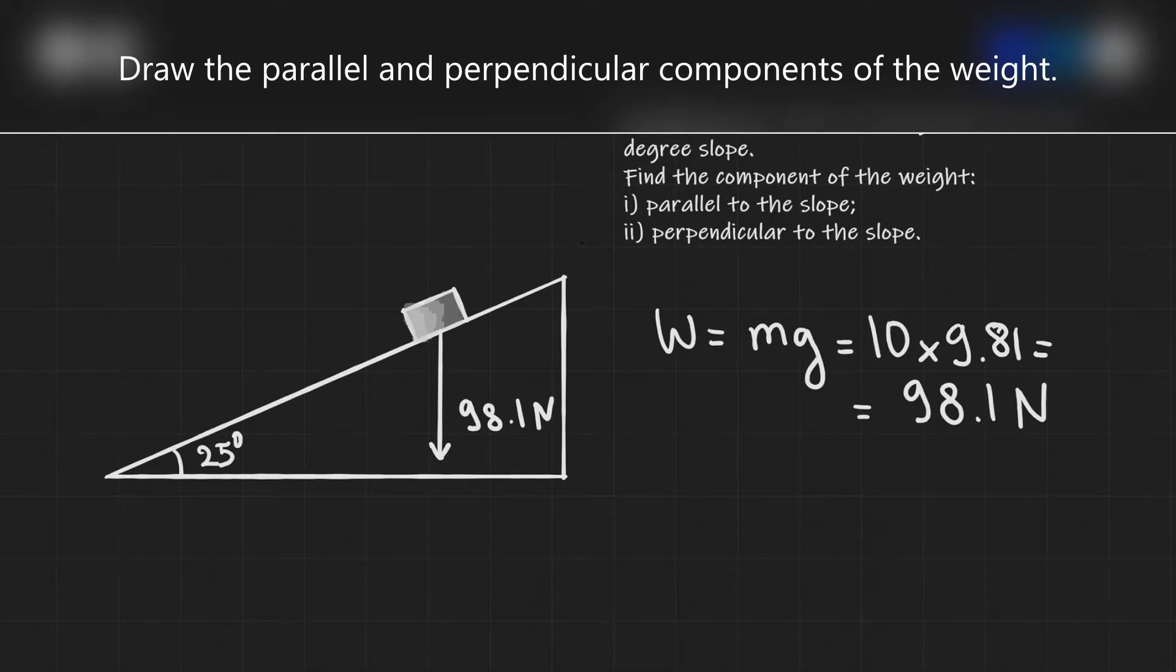The next step would be to once again realize that this weight vector can be represented by the addition of two vectors. One of them is going to be parallel to the slope, the other one will be perpendicular to the slope. Okay well let's draw these. So this 98.1 vector is going to be represented by the addition of one vector and then another one along here. So it's going to be one along this side along the slope and one vector which will be going perpendicular to the slope.